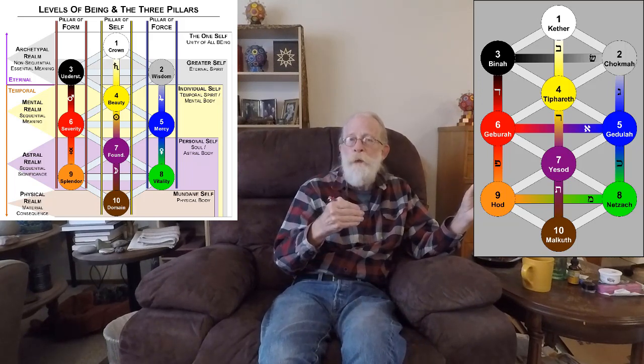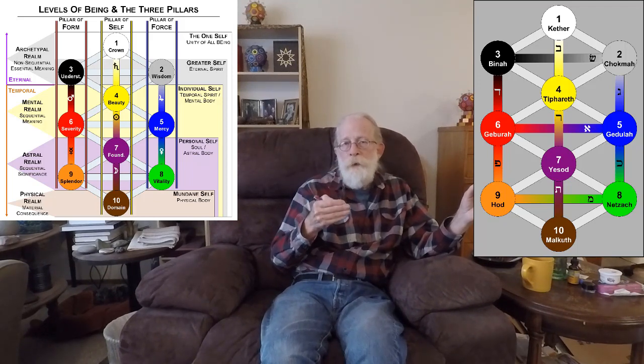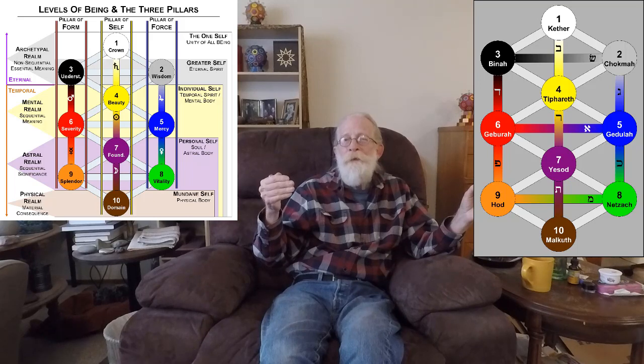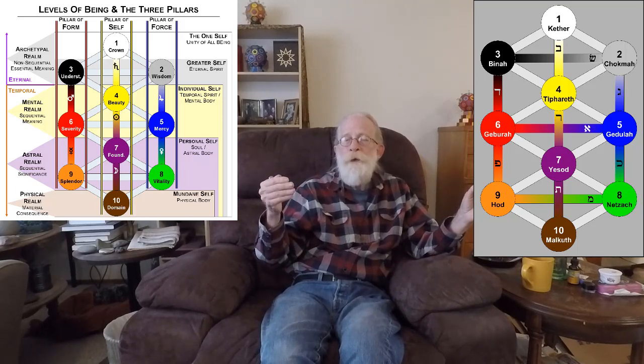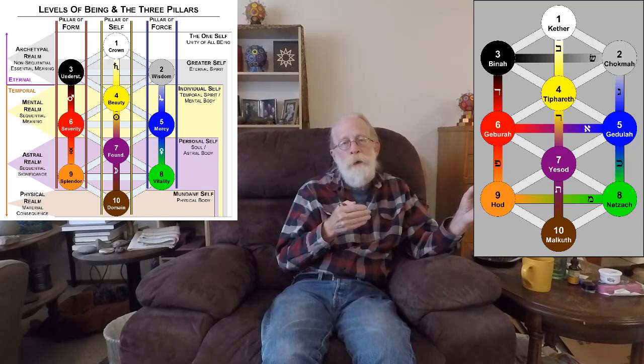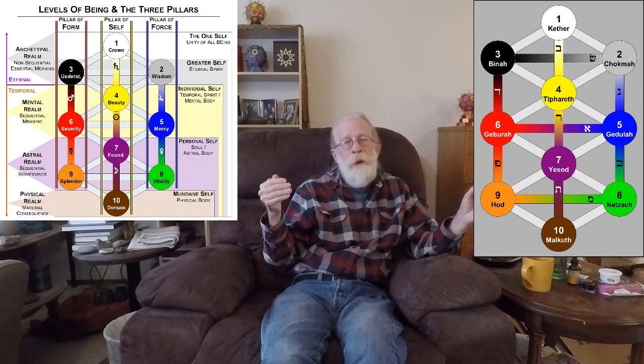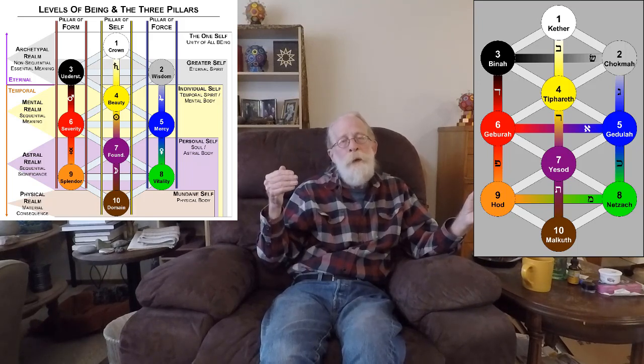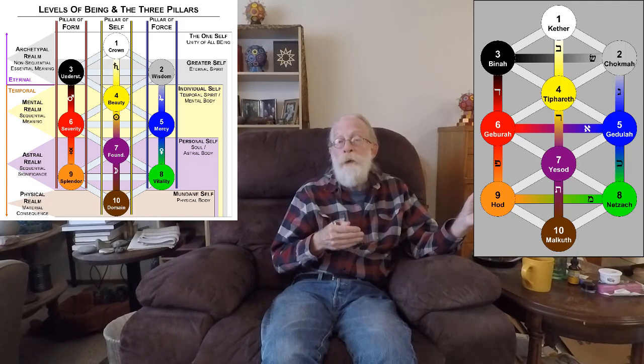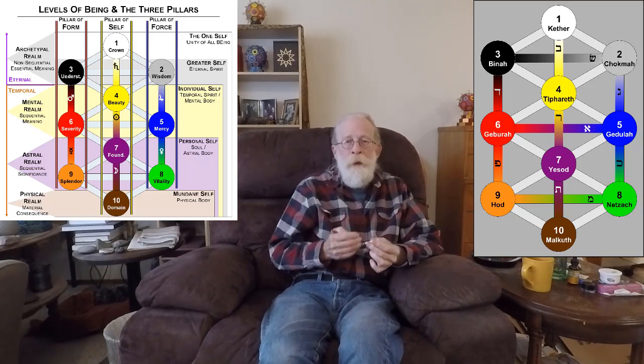Then the Sun, Resh, takes us from Tiferet to Yesod, from mental to astral. And Kaf, the path of Venus, takes us from Gedulah to Netzach, from mental to astral. And the path of Peh, Mercury, takes us from mental to astral. And then the path of the Moon, of Tav, takes everything into the physical.